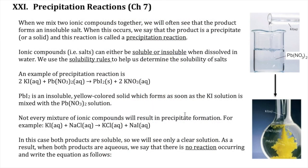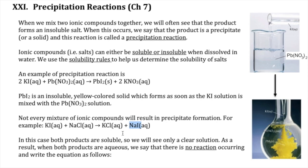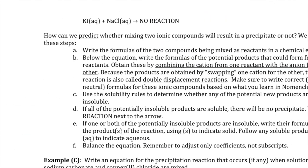Not every addition of two aqueous reactants results in a precipitate formation. Sometimes you add two reactants and the two products you make are both aqueous. In that case, we say that there is no reaction. An example will be the mixing of KI and NaCl. The products we get are KCl and NaI. These are both soluble salts, so we will write no reaction on the product side as shown here.